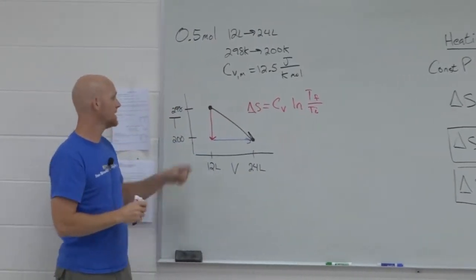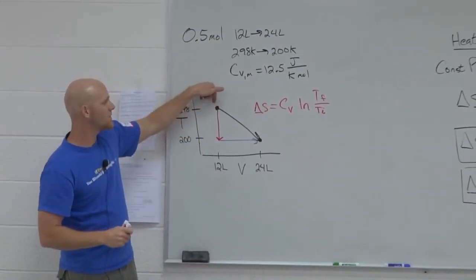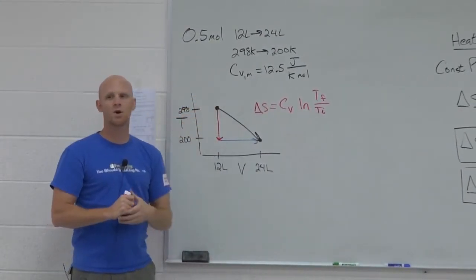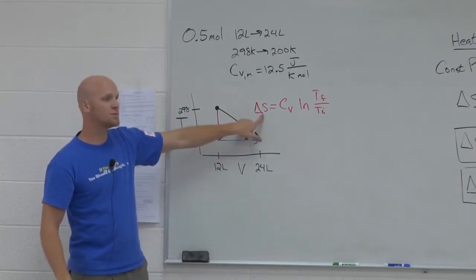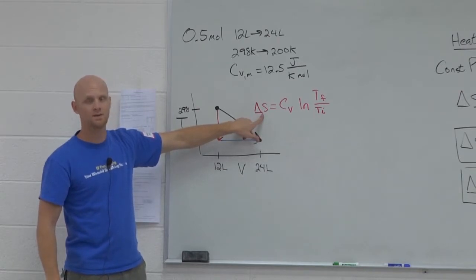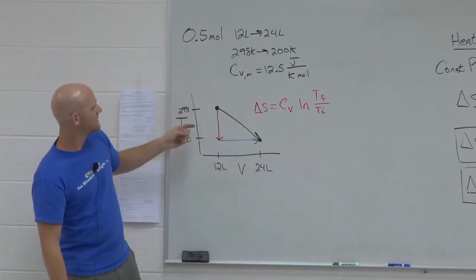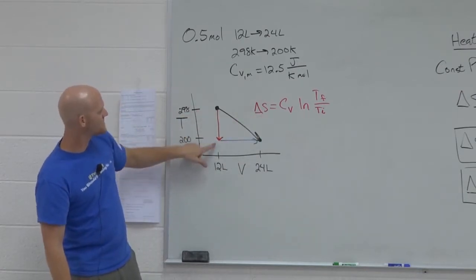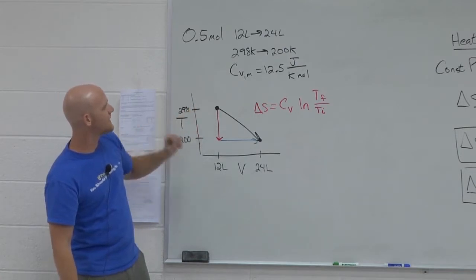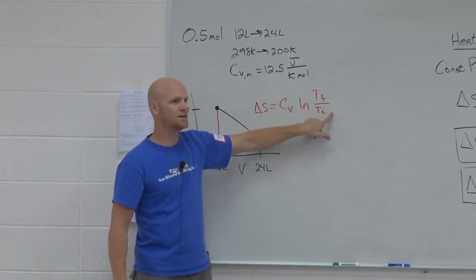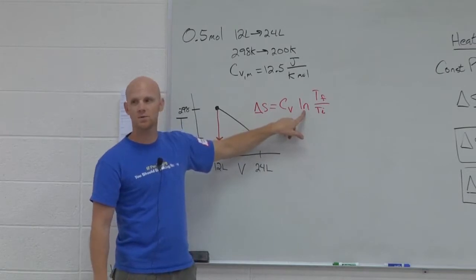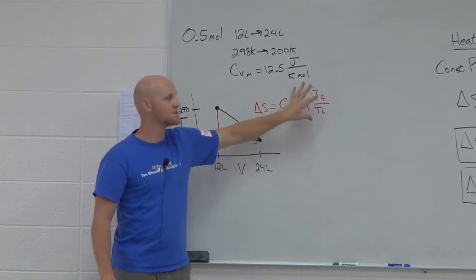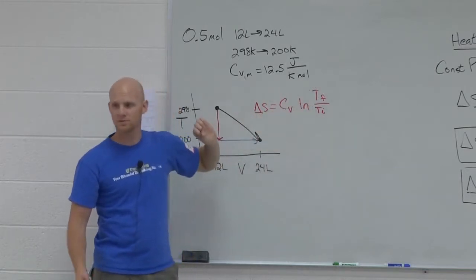Based on what you know about entropy, if all I'm doing is a decrease in temperature, entropy should go down. So delta S here should be negative. We're going from a final temperature of 200 to an initial temperature of 298. So we'll have 200 over 298 — that's less than 1, and the natural log of a number less than 1 is negative. So this will come out negative, just like it's supposed to.